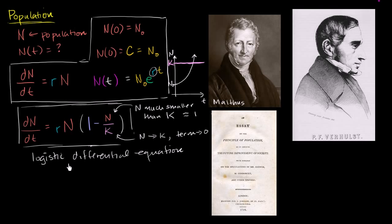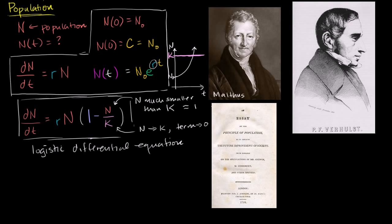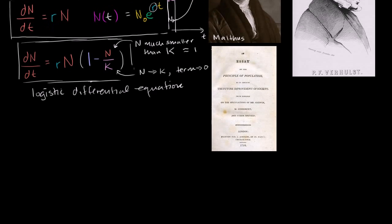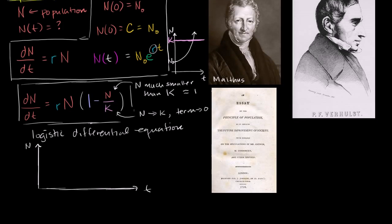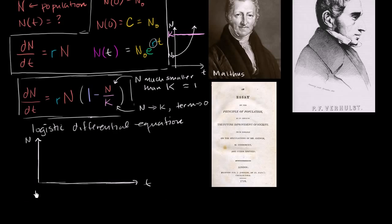The solution to the logistic differential equation is the logistic function, which essentially models population growth approaching a ceiling. But before we actually solve for it, let's try to interpret this differential equation and think about what the shape of this function might look like. Let me draw some axes — the time axis and the population axis — and think about a couple of situations.